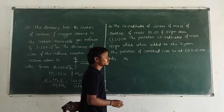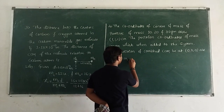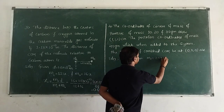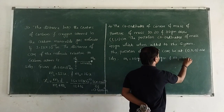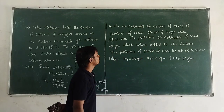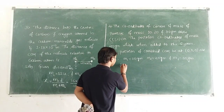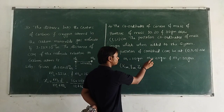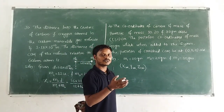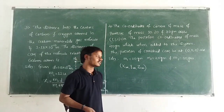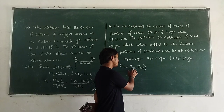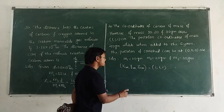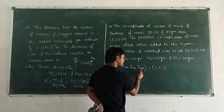Initially there are 3 masses: M1 = 10 gram, M2 = 20 gram, M3 = 30 gram. The coordinates of the center of mass of these 3 particles are XCM = 1, YCM = 1, ZCM = 1. So the center of mass coordinates for the original three-particle system are (1, 1, 1).